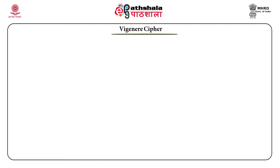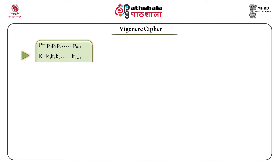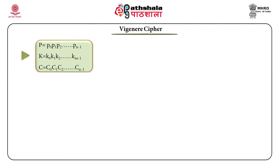How does a Vigenère cipher work? The plain text p has n characters — p0, p1, p2, up to p(n-1). The key k has m characters — k0, k1, k2, up to k(m-1). The cipher text is built with the same length as the plain text. Keep in mind that cipher text length is the same as plain text length.